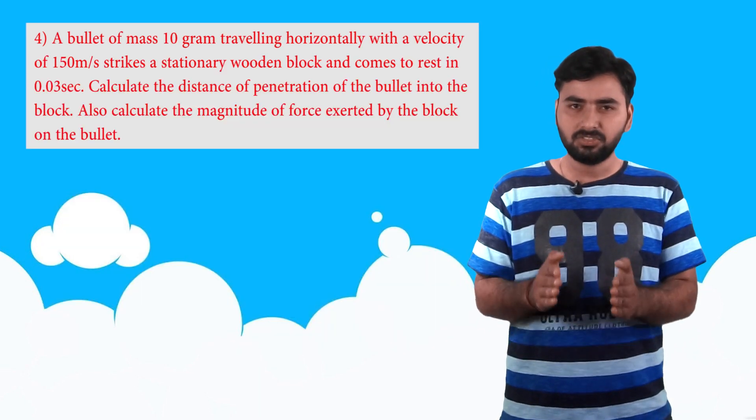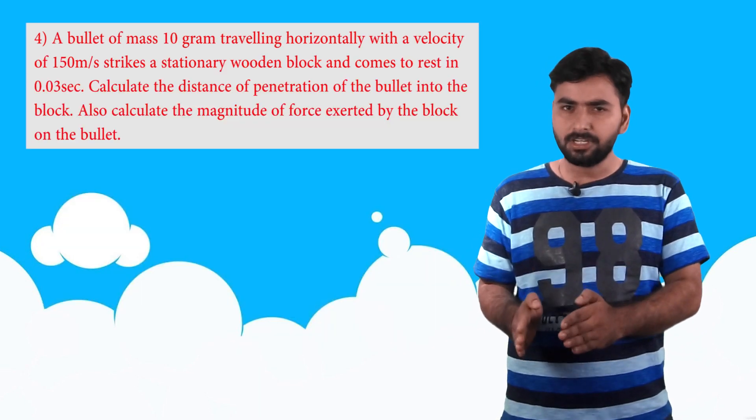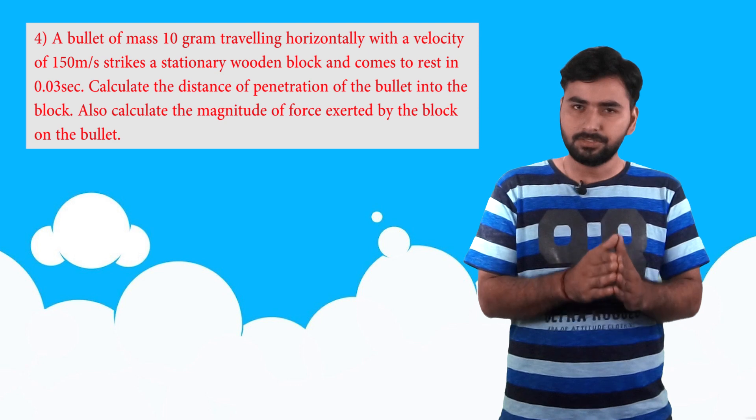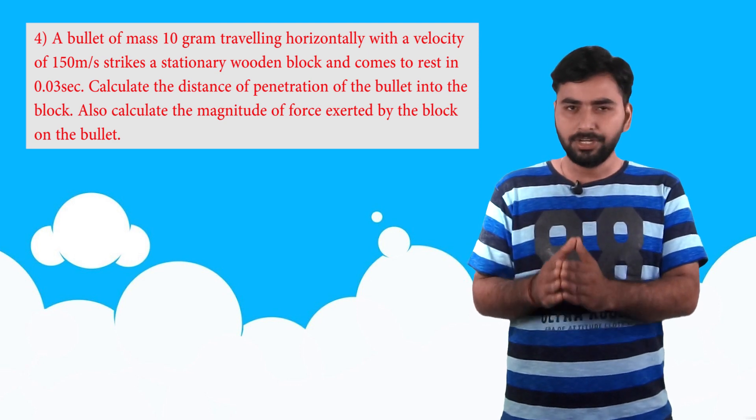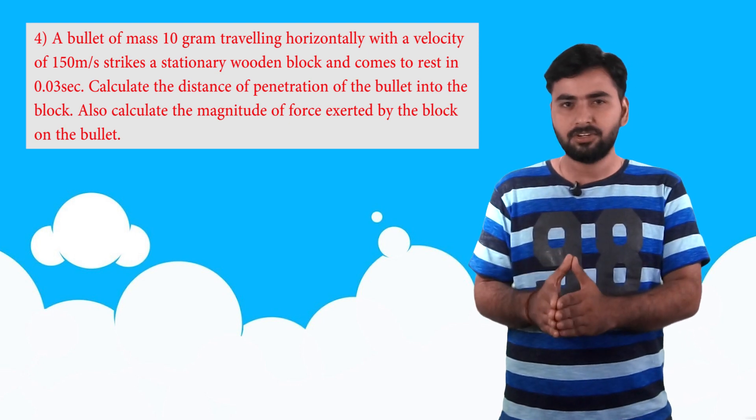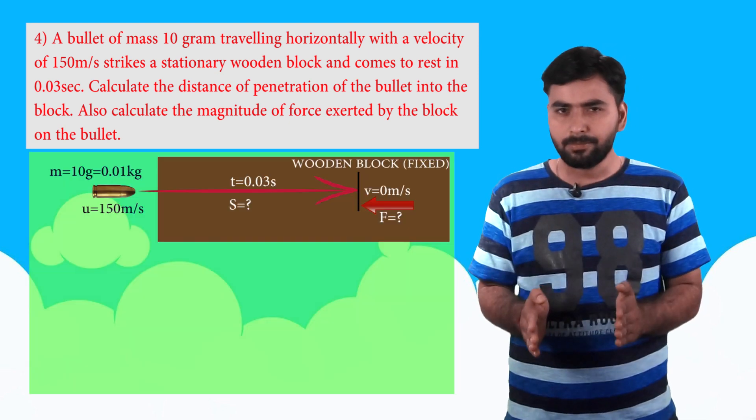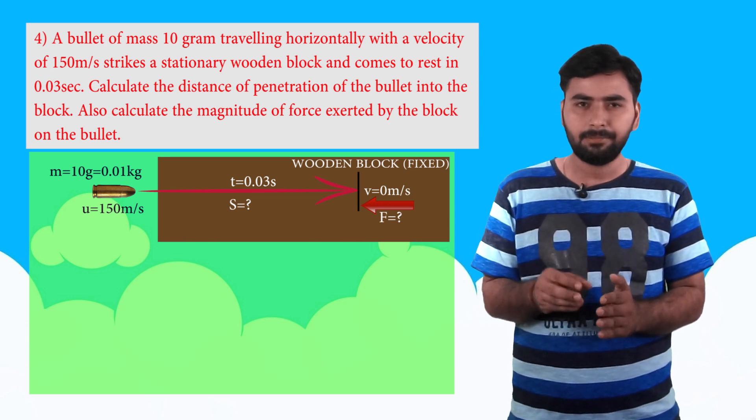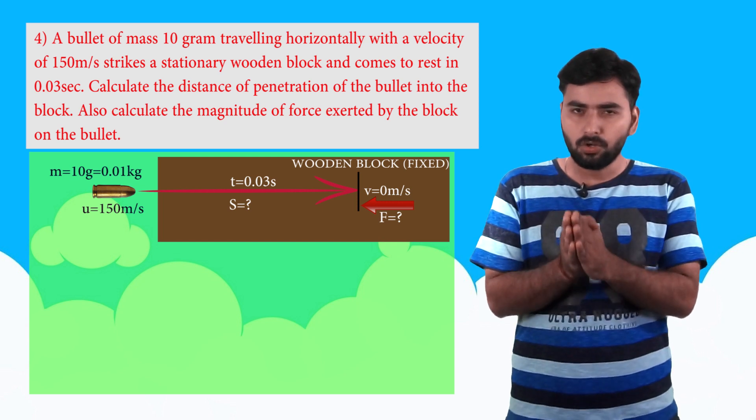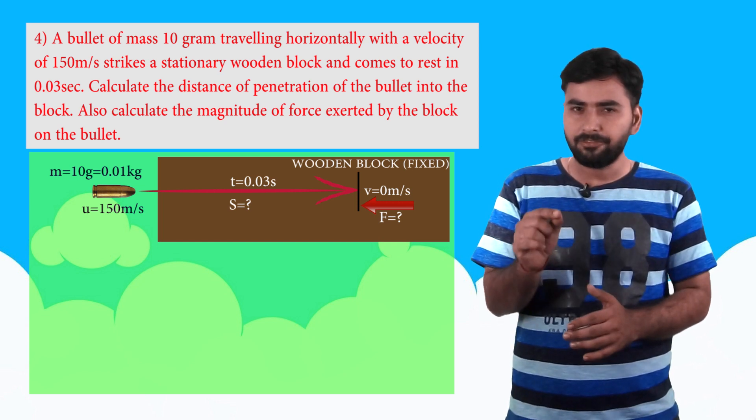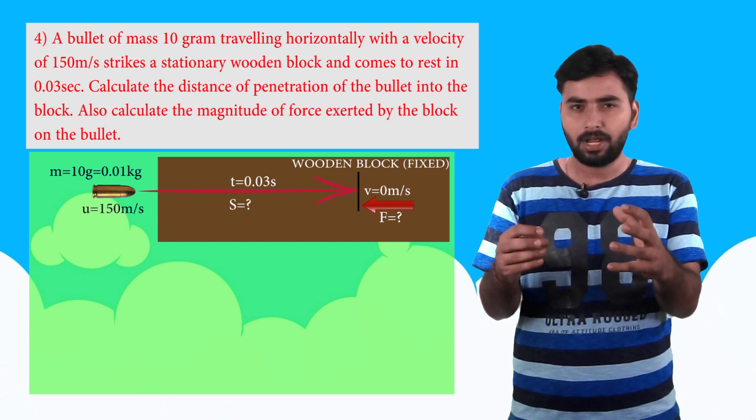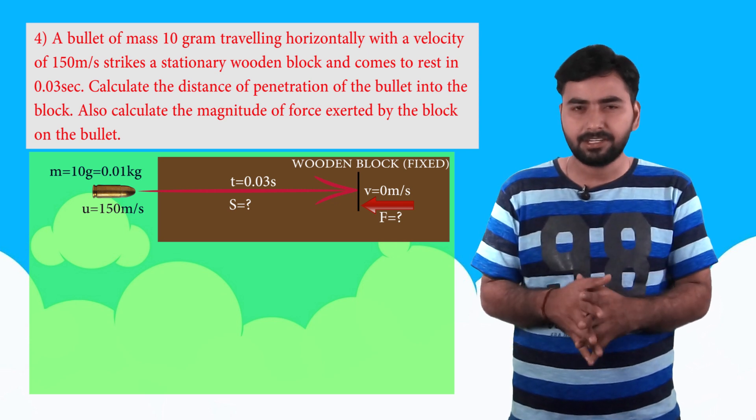And the fourth question is: a bullet of mass 10 grams traveling horizontally with a speed of 150 meter per second strikes a stationary wooden block and comes to rest in 0.03 seconds. We need to find the distance of penetration of bullet in the block and also the force exerted by wooden block on the bullet. So in this question, a bullet has mass of 10 gram, let's convert to SI units, 0.01 kg. It's already moving with a velocity of 150 meter per second, and with this velocity it enters into a wooden block, a wooden target which is stationary, and penetrates into it.